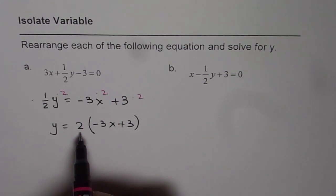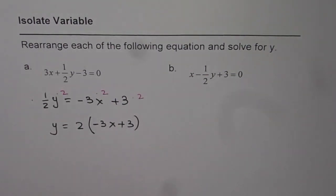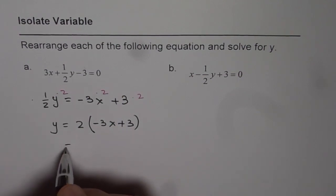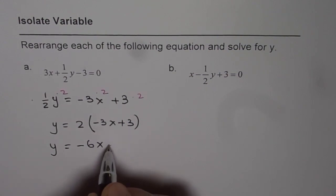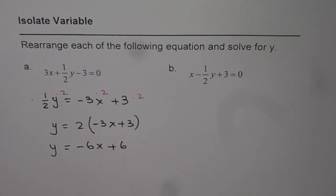And here, 2 gets multiplied with both of them. Now, you can expand, applying distributed property, and get your answer. So y equals to minus 6x plus 6. So that is how you can write what y is.